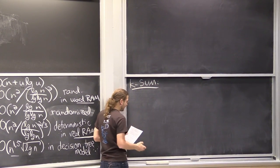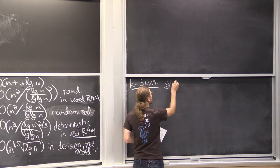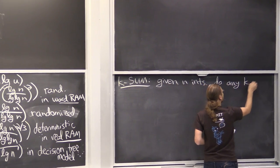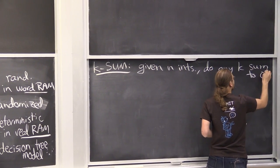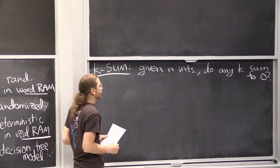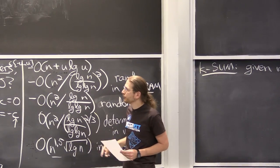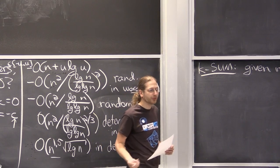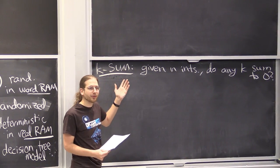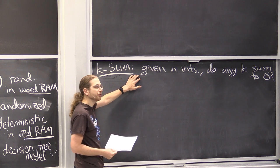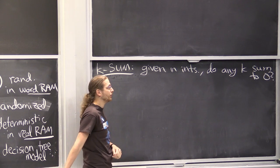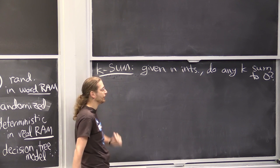Let me talk about k-SUM, the obvious generalization: given n integers, do any k of them sum to 0? Here there are actually stronger lower bounds. 3-SUM gets a lot of attention because many problems we care about are linear or quadratic. K-SUM is NP-hard in general — it encodes something like the partition problem. If you have n integers whose overall sum is 0 and want to know whether any n/2 of them sum to 0, that's roughly partition.